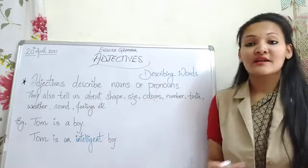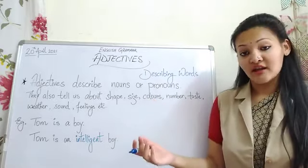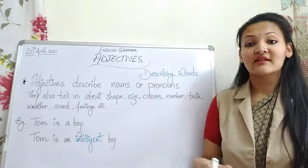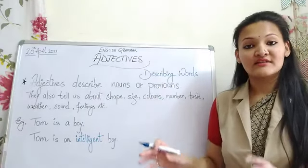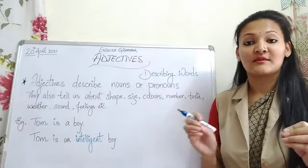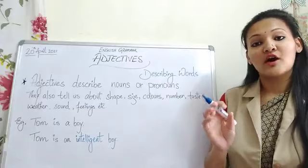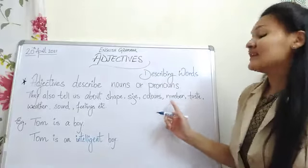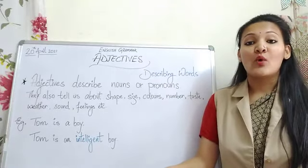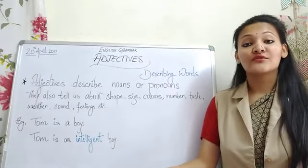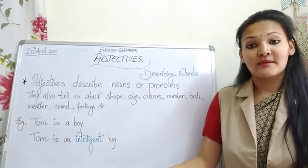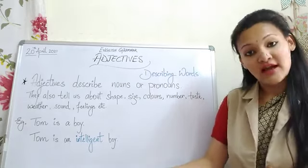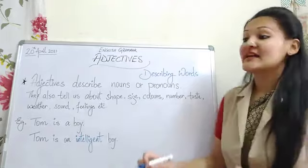Then, colors — all the names of colors. Colors like pink, red, black, white — whenever we use them, they are also adjectives. Then, number — for example, one, two, fifty, many — words like 'many' — all these are adjectives of number.